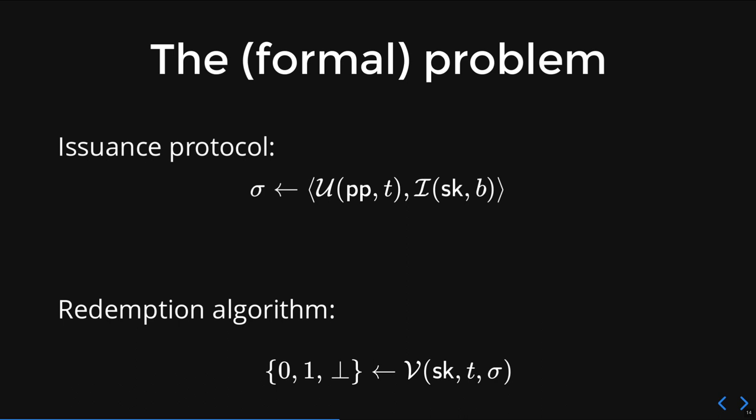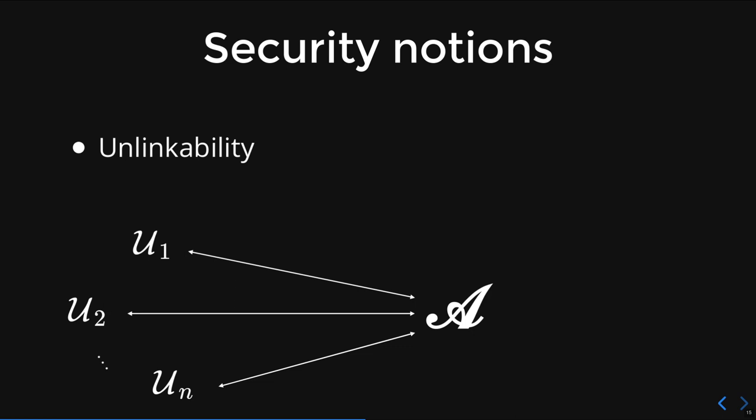If we forget about token hijacking, there are three basic security properties that these algorithms should satisfy. First, unlinkability. After interacting with multiple users, it should be difficult for the issuer to link a particular token to its issuance session. In the case of a private metadata bit, we demand that it is not possible to link two sessions as long as they have the same bit. Formally, this is achieved by letting the adversary pick even the public parameters, but then demanding the existence of an extractor that can find out the hidden bit from a token. And if you're familiar with blind signatures, this is somewhat close to the definition of blindness, if we forget about privacy of the private metadata bit.